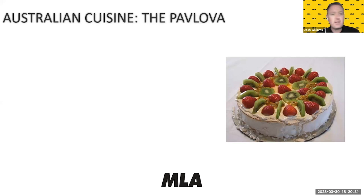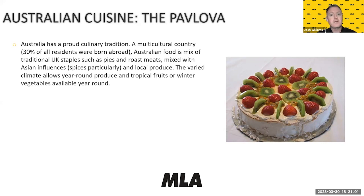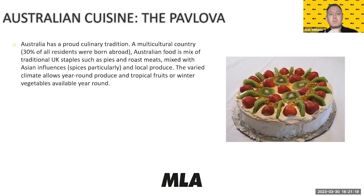I thought it wouldn't be fair talking about Anglophone culture without talking about Australia, where I'm from. Something that you may have tried is a traditional Australian cake — although New Zealanders will probably say it's from New Zealand, but we don't believe them. Australia has a proud culinary tradition. It is a multicultural country — currently about 30% of all residents are born abroad. We have a mix of traditional UK staples such as pies and roast meats, mixed with an Asian influence.